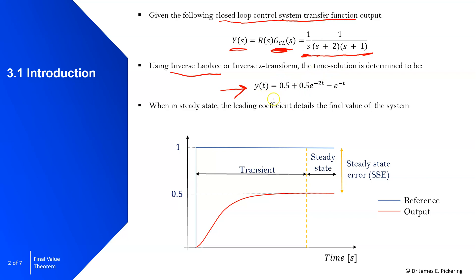In the time domain, y of t equals 0.5 plus two exponential terms. When in steady state, the leading coefficient details the final value of the system — in this case 0.5. Looking at the graphical response, the reference is a unit step input of value one and the output is shown in red. The transient part is where we have dynamics and rate of change; once there is no change, the system is in steady state with a final value of 0.5.